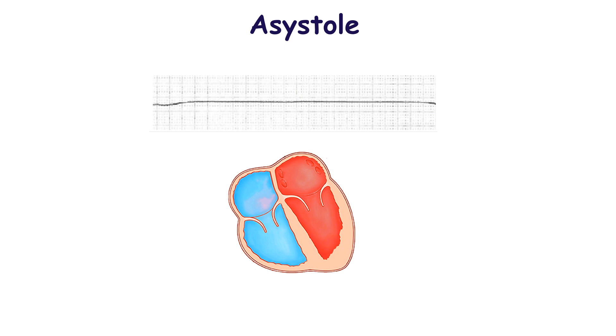If we see a flat line at the ECG monitor without any waves, this state is defined as asystole. There is neither heart contraction nor quivering.